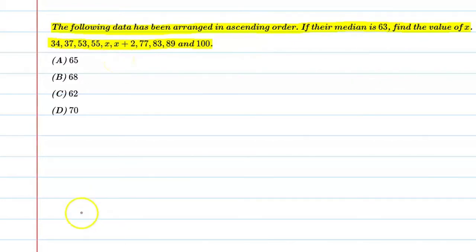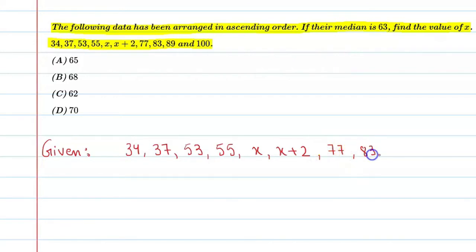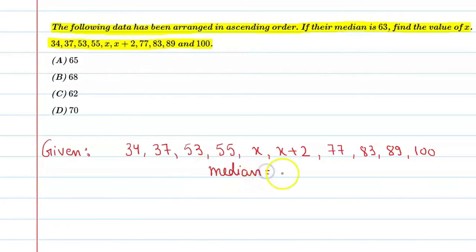So let's start this question and first of all we will write the given. Given is data: 34, 37, 53, 55, x, x plus 2, 77, 83, 89 and 100. And the median of this data is 63.